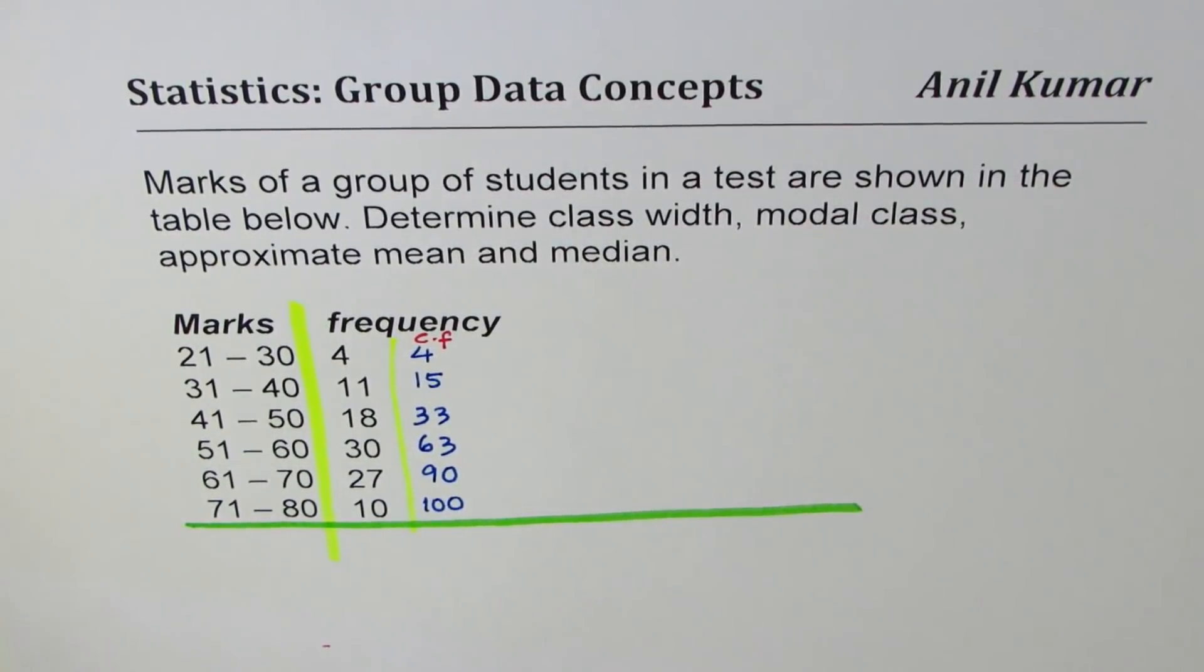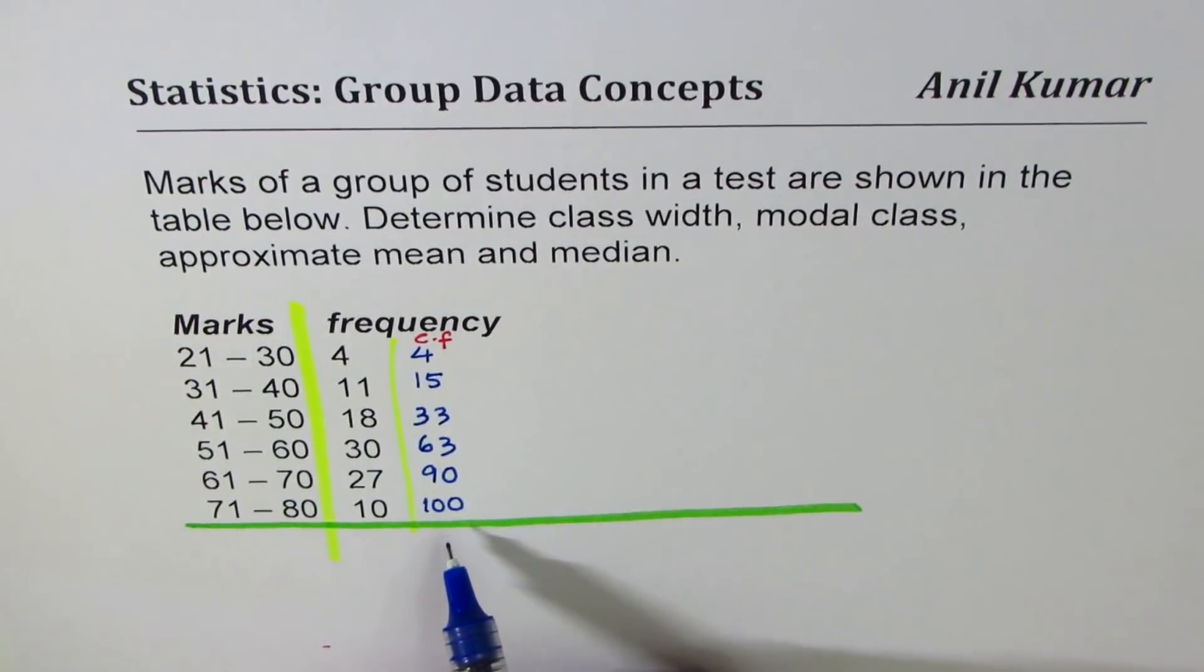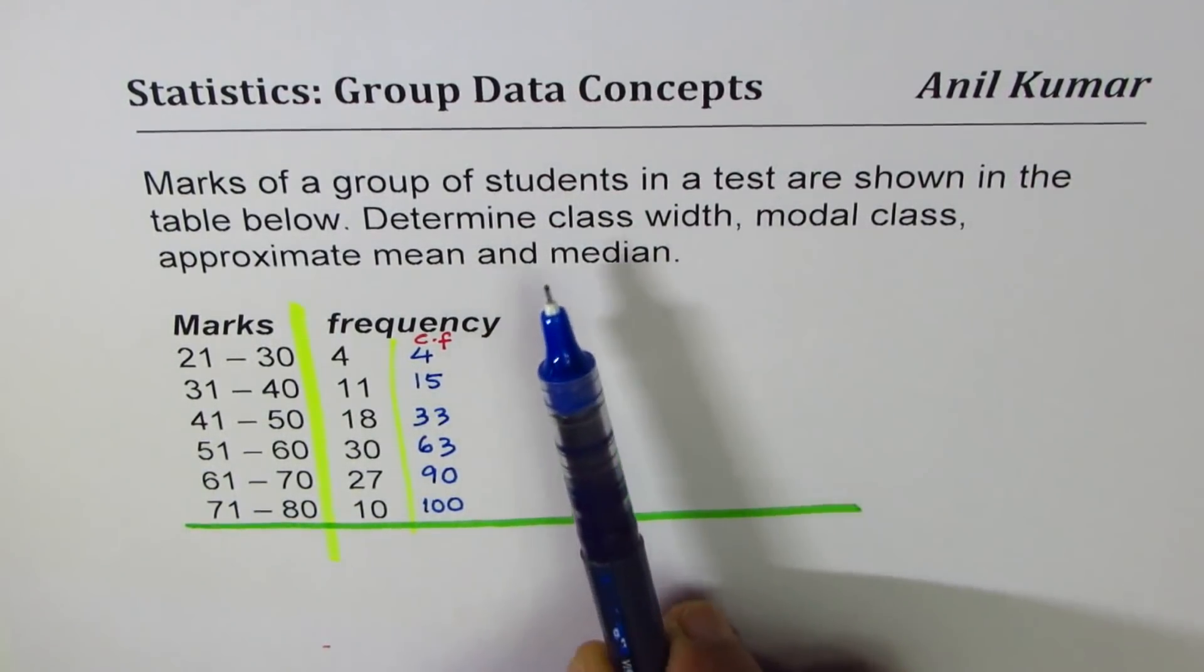So there are total 100 students in all. For easy calculations I have taken this number to be 100. In your examples this number may not be 100. Now let's answer the questions.